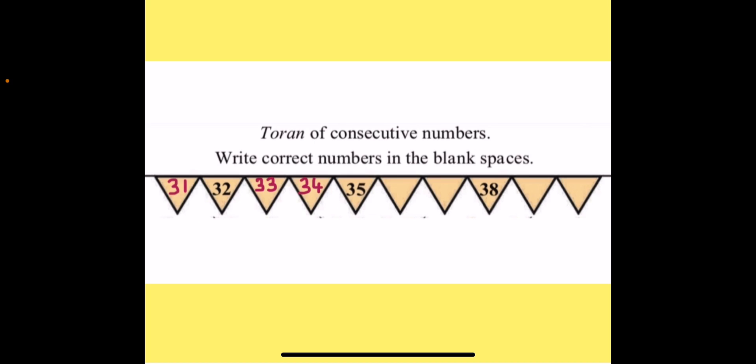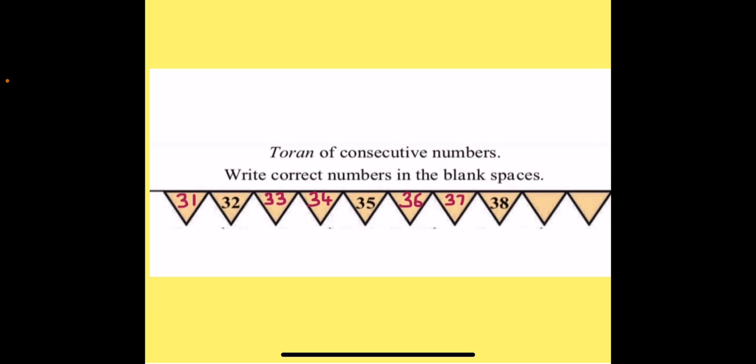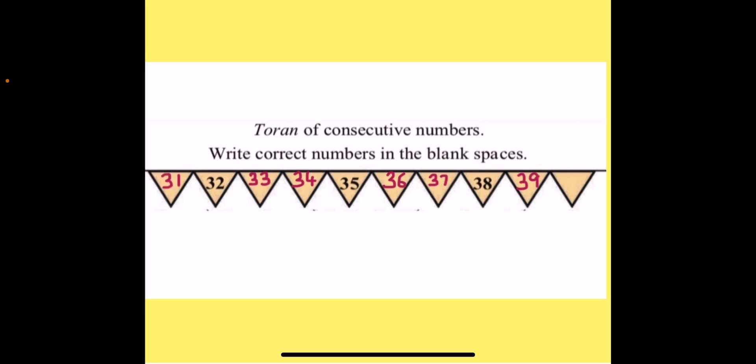After 34, the next number is already given, that is 35. So we have to write the number after 35. After 35, what number will come? Yes, we get 36. And after 36 comes 37. The next number already given is 38, so after 38 what number do we get, children? 39. And after 39 we get our next number, that is 40.